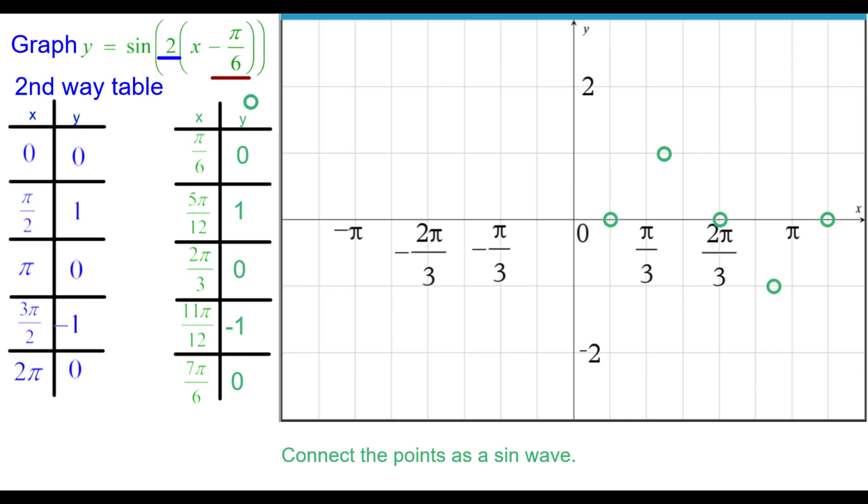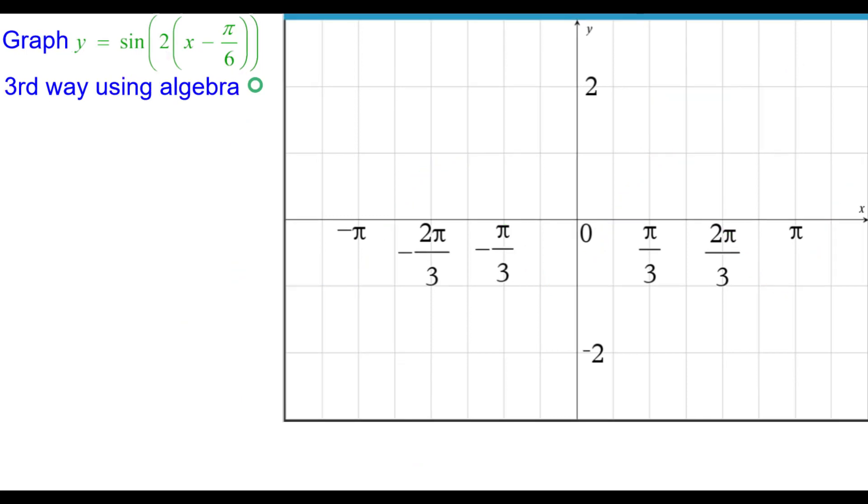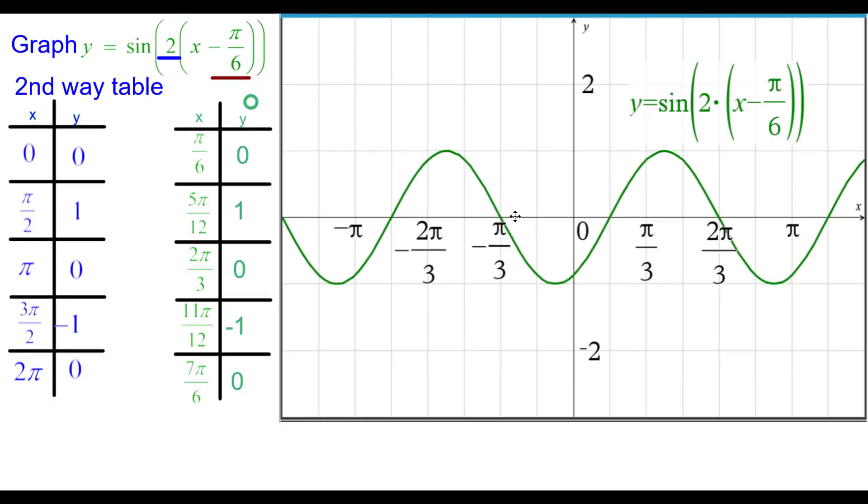Connect the points as a sine wave. And we can plot another one to the left. Another wave to the left. Going back a period of pi from each point. And then connect another sine wave. And it just kind of keeps waving along there.